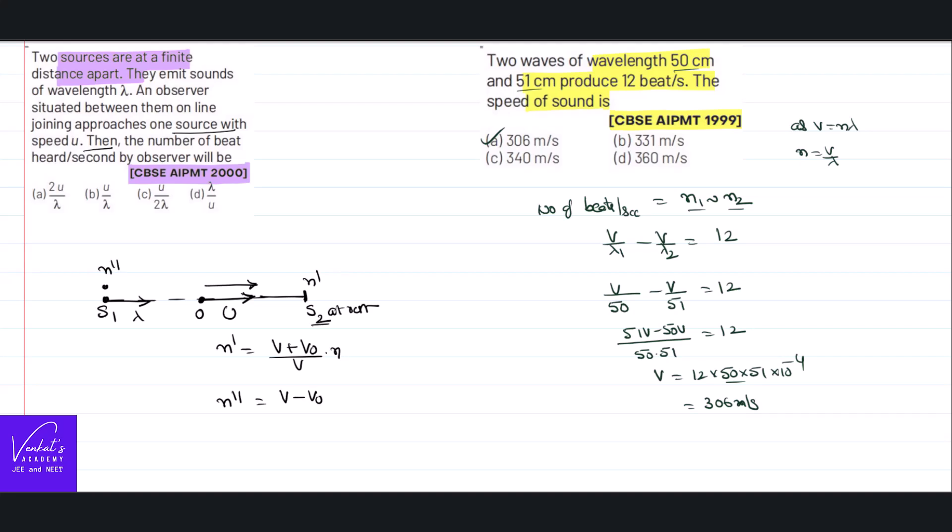Then the number of the beats per second is difference between the frequencies. n dash is higher, so n dash minus n double dash. That is v plus v₀ by v and n minus v minus v₀ by v and n.